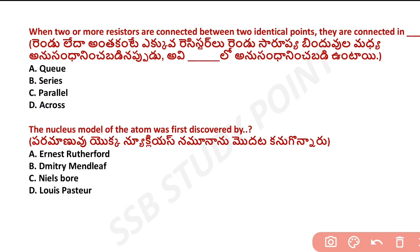Next question: the nucleus model of an atom was discovered by whom? The answer is Rutherford. Rutherford was the first to discover the nuclear model of the atom.